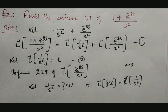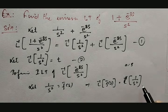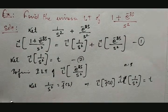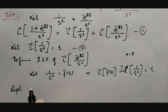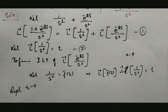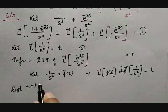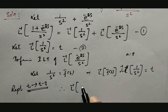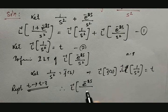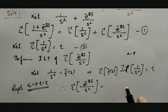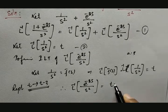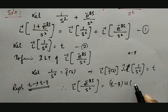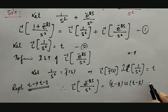The inverse Laplace of 1/s² equals t. Now replace t by t minus a, that is t minus 3. Therefore, the inverse Laplace transform of e raised to minus 3s divided by s squared is t with t replaced by t minus 3, then multiplied by the unit step function u(t minus 3). I will call this equation number 3.